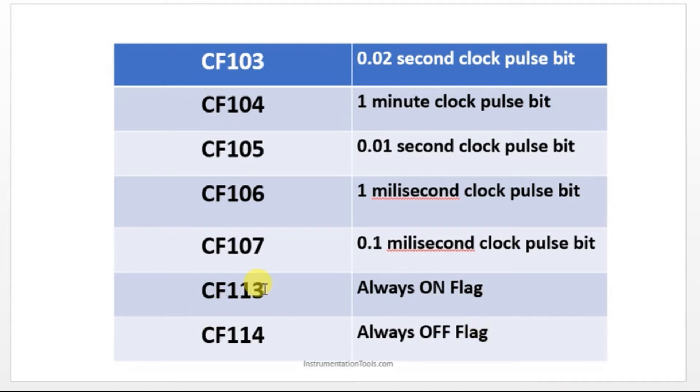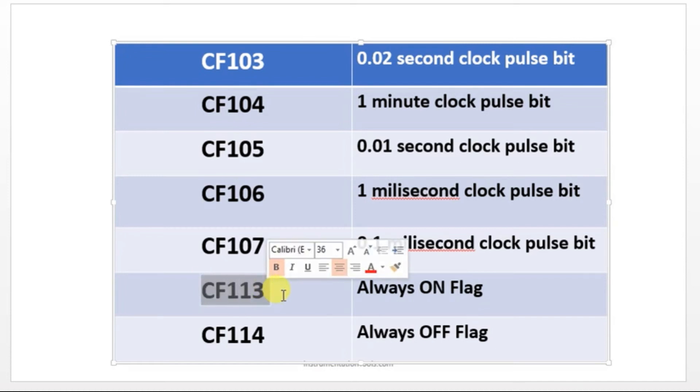We also have always on flag and always off flag, which means whenever the CPU is on, this flag will be continuously on. You can make use of this flag to turn on some output. Whenever your PLC is on, you can able to turn on an output using this flag. There is no need to connect any memory coil or any other input address. You can directly use this flag to turn on that particular output. And this is for always off flag.